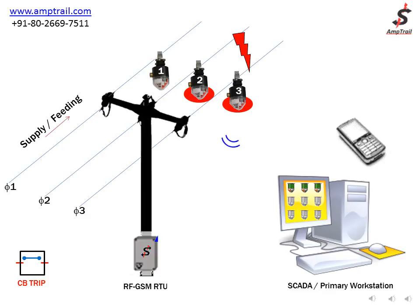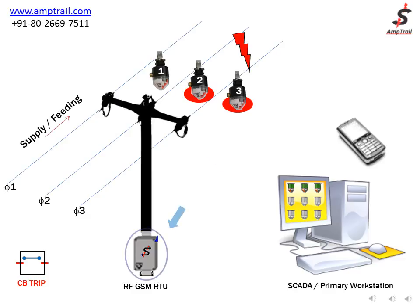FLA3 indicators will then transmit the fault information to the RF-GSM RTU over RF. On receiving this information, the RTU processes and communicates the fault information to the SCADA workstation over GPRS.